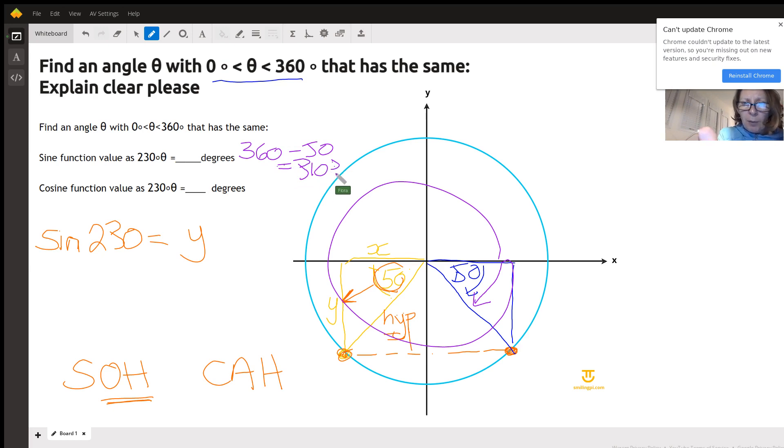The next one here I asked about the cosine, so let me erase some of this here. We don't need this, this was for the sine part. So cosine, let's remember the CAH, so adjacent over hypotenuse.